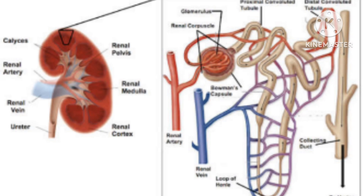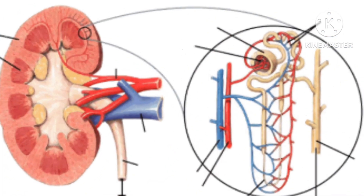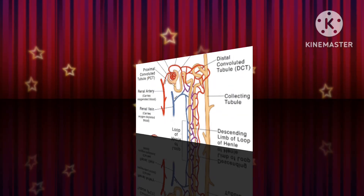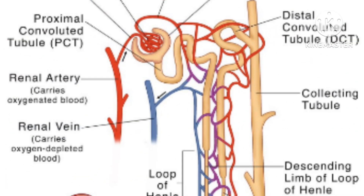There are more than 1 million nephrons in each of our kidneys. These vital kidney functions are done with the help of nephrons. The diagram of nephron is very important for school exams, but the diagrams given in your textbooks are not so easy, so I am showing you how to draw an easy diagram of nephron to get good marks in biology.